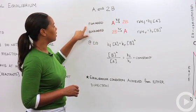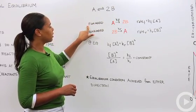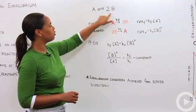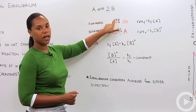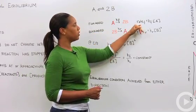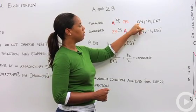If we break this up into the two separate components we'll look at the forward reaction so the reaction where A goes to form two moles of B we'll say it has some rate constant k sub f for the rate going forward.